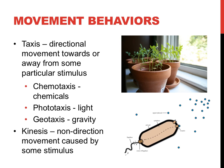Many movement behaviors of plants and microorganisms are innate behaviors, hardwired into an organism from birth. The two major types of movement are taxis and kinesis. Taxis is the directional movement towards or away from some particular stimulus. The prefix 'chemo' refers to chemicals, 'photo' refers to light, and 'geo' refers to the earth. Geotaxis would be the movement towards the earth, phototaxis the movement towards light, and chemotaxis the movement towards some chemical. Phototaxis is exhibited in the plants near the window on the top of this slide, as the plant is moving towards the very well-lit window.